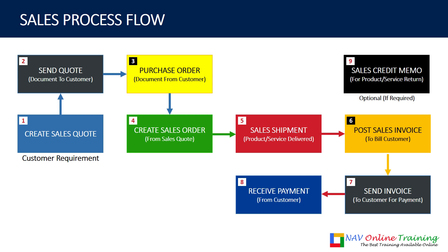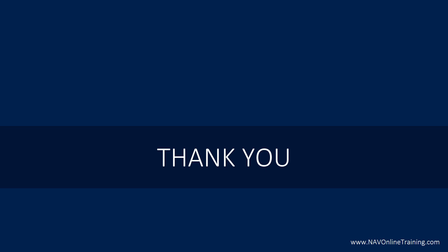So this is the entire sales process. You start with the sales quotation, send the quotation to the customer, the customer uses that quotation and sends you the purchase order. Then you convert that quotation to an order, ship the material or services, post the invoice, send the invoice to the customer, and receive the payment. If required, you might need to send the credit memo for reversing the invoice, if the customer doesn't want your services or product, or if there are any differences to post. Thank you so much for watching — in the coming video I'm going to show you how to do this transaction inside NAV. I'll see you in the next video tutorial.